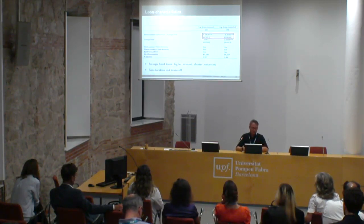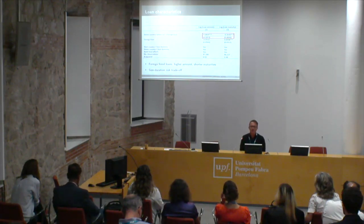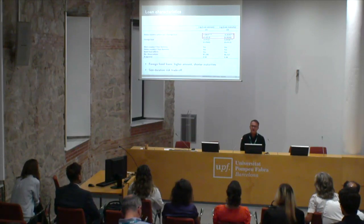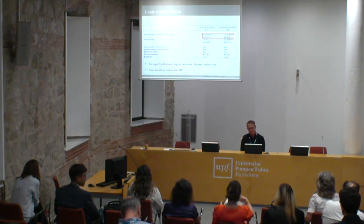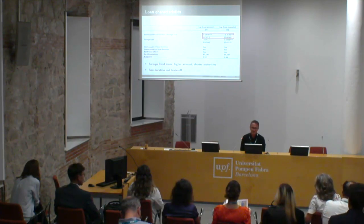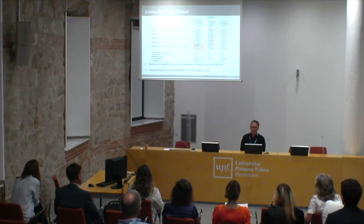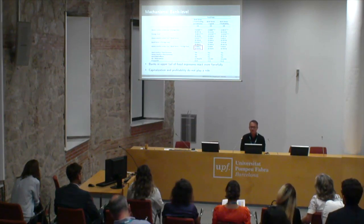It's not just the probability of giving a fossil loan that changes — loan characteristics also change. Banks giving fossil loans abroad now lend larger amounts at shorter maturities, which is an interesting trade-off between size and duration. In terms of mechanisms, why are banks reacting this way? It's primarily banks that are specializing in fossil lending — not low-capital or low-profit banks.